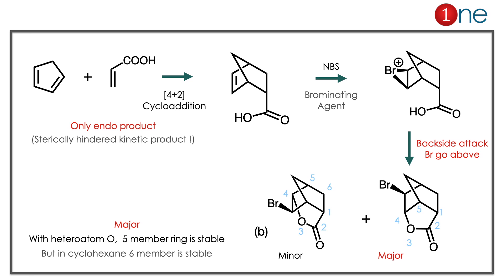The starting material is a conjugated diene and you are using an alkene, so there is a [4+2] cycloaddition. The [4+2] cycloaddition always favors the endo product — this is very important. It is a sterically hindered kinetic product, but it is the major one. You have the endo acid group. Then in the next step, NBS is used — NBS is a bromine supplier which will brominate the alkene. Bromine with positive charge is formed, and the acid group can perform a backside attack. The 5-membered ring with the heteroatom is more stable than the 6-membered ring. So bromine ends up above the plane and the 5-membered cyclic product is below the plane. The answer is B; the minor product is the 6-membered heterocyclic ring.